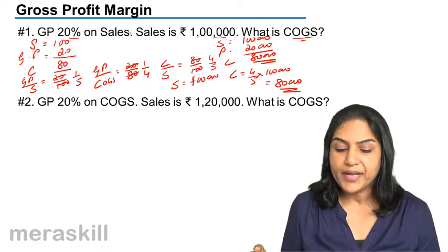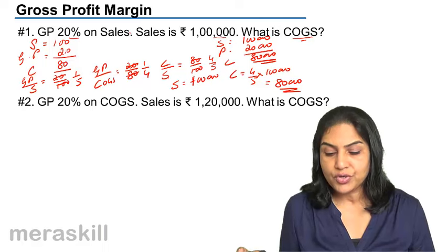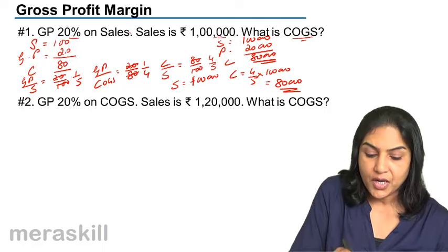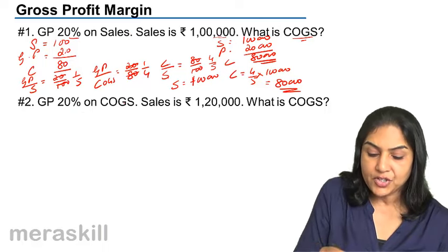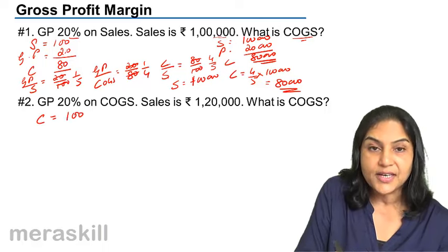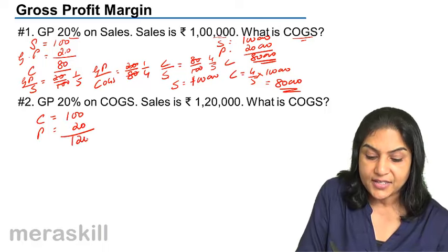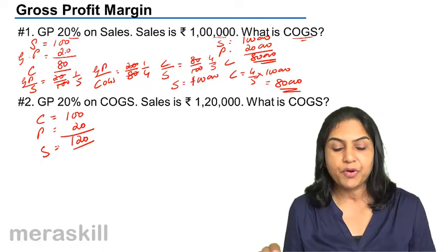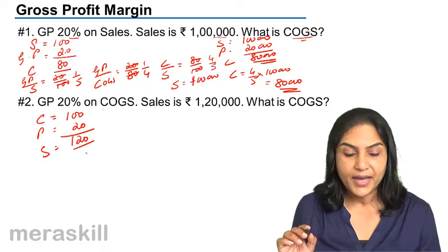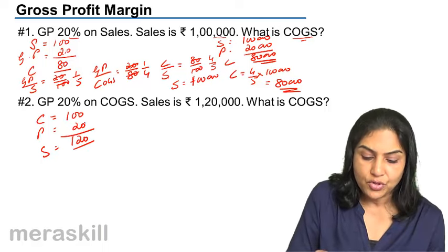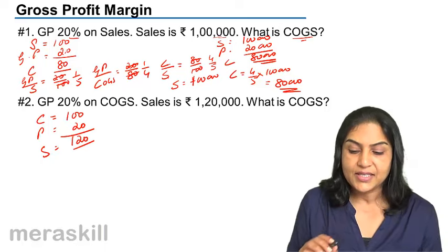Now, if GP is 20% on cost of goods sold and sales is 1 lakh 20, what is the cost of goods sold? Here GP is on cost, so cost of goods sold is 100, profit is 20, therefore sales becomes 120. We have the relation between any three: profit by cost of goods sold, profit by sales, and cost by sales.